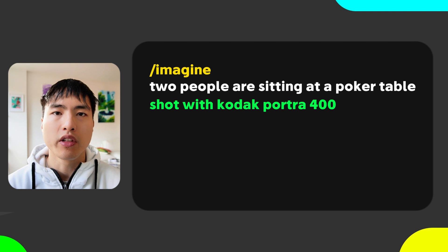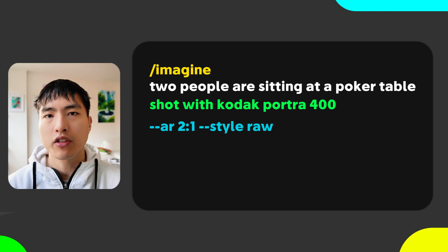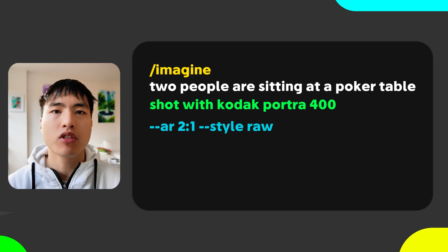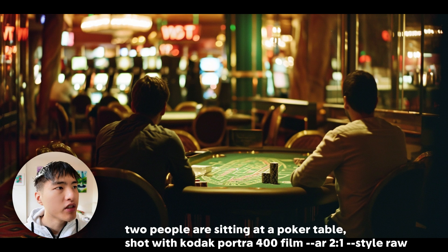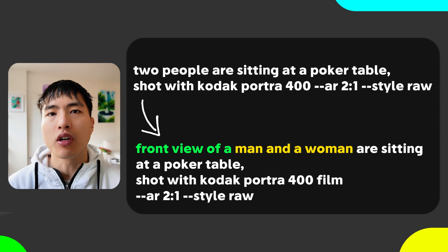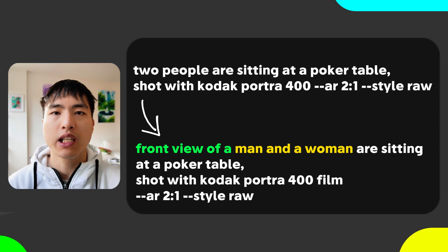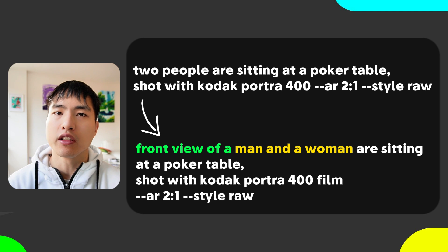To get a wide image, I'm going with a 2 to 1 aspect ratio and I'll also use raw style to make sure that Midjourney follows my prompt as closely as possible. This image is reasonable, but I think we could actually be a bit more direct with what we want. I'm looking for a front view and to keep it interesting, I'll prompt for a man and a woman sitting together.